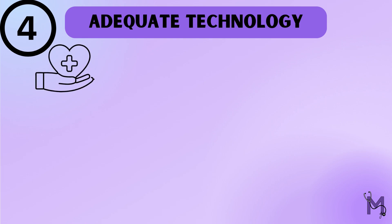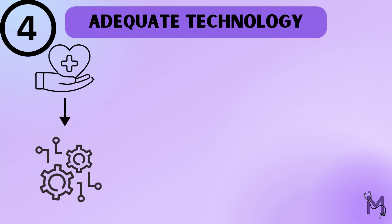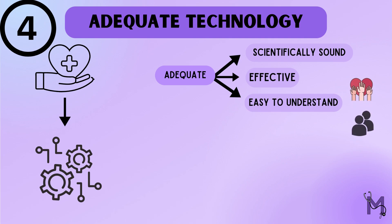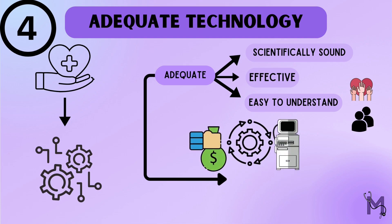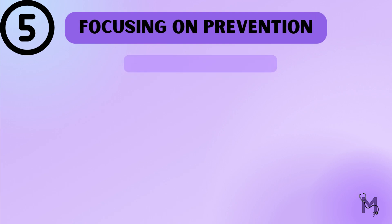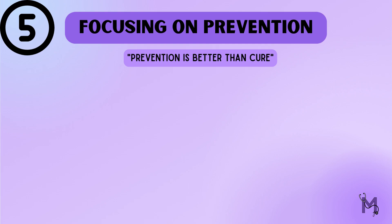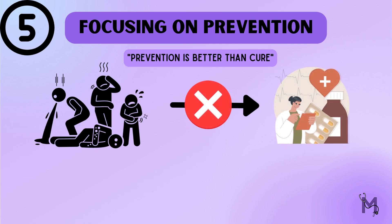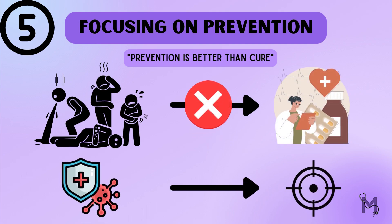The next principle is adequate technology. To provide efficient health care services, it is important to have access to adequate technology. By 'adequate' we mean the technology should be scientifically sound, effective, and easy to understand by both the volunteer and the people. This principle also applies in situations where costly procedures and equipment are used when cheaper and scientifically acceptable alternatives are available. Finally, we have the principle of focusing on prevention — prevention is better than cure. Instead of waiting for a patient to present with disease and then treating them, we should focus on preventing the disease early on.